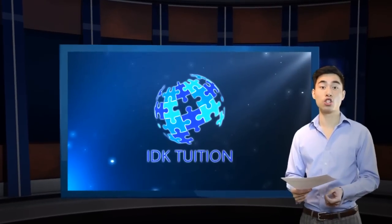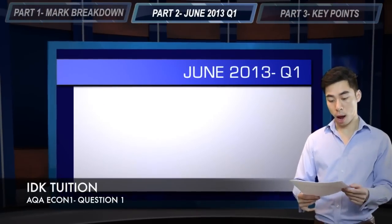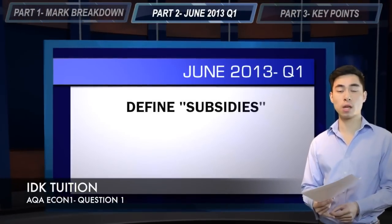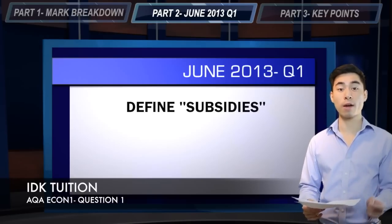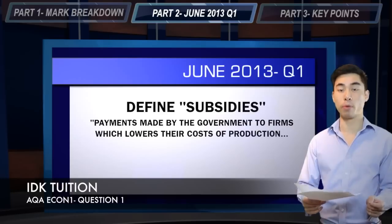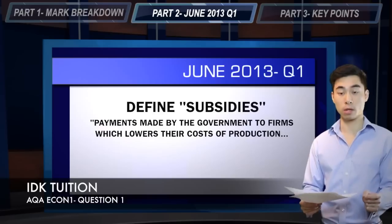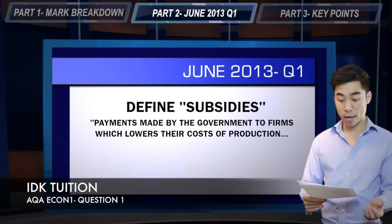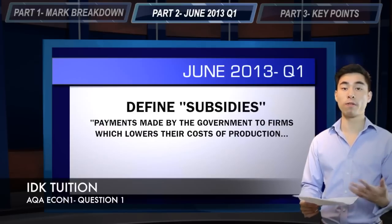Let's take a look at June 2013, question one, context number one. The question asks you to define the term 'subsidies.' You want to start off with your written definition, and I think you want to be aiming for the third bullet point down on the mark scheme — if you don't have a mark scheme, I strongly recommend that you get one. So: 'money paid by the government to firms in order to reduce their cost' — that would actually pick up all five marks.